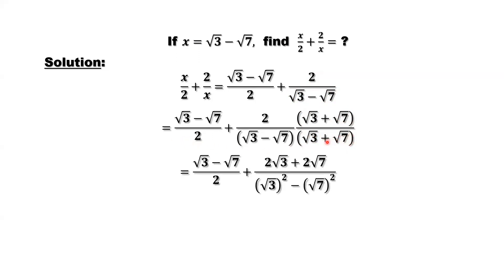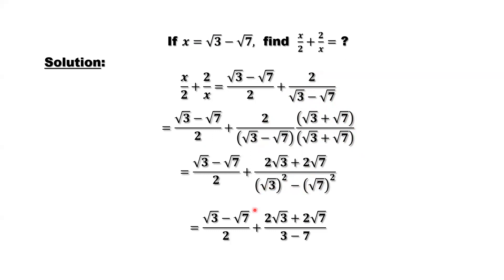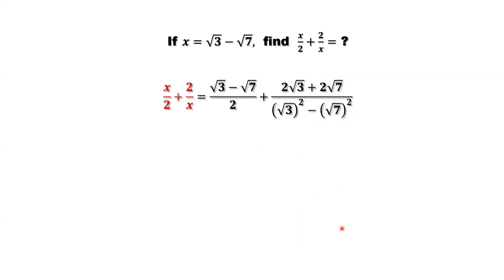Then simplify. We have a minus b times a plus b, giving a squared minus b squared. Distribute 2 to square root of 3 and square root of 7. Square root of 3 squared is 3, and square root of 7 squared is 7.